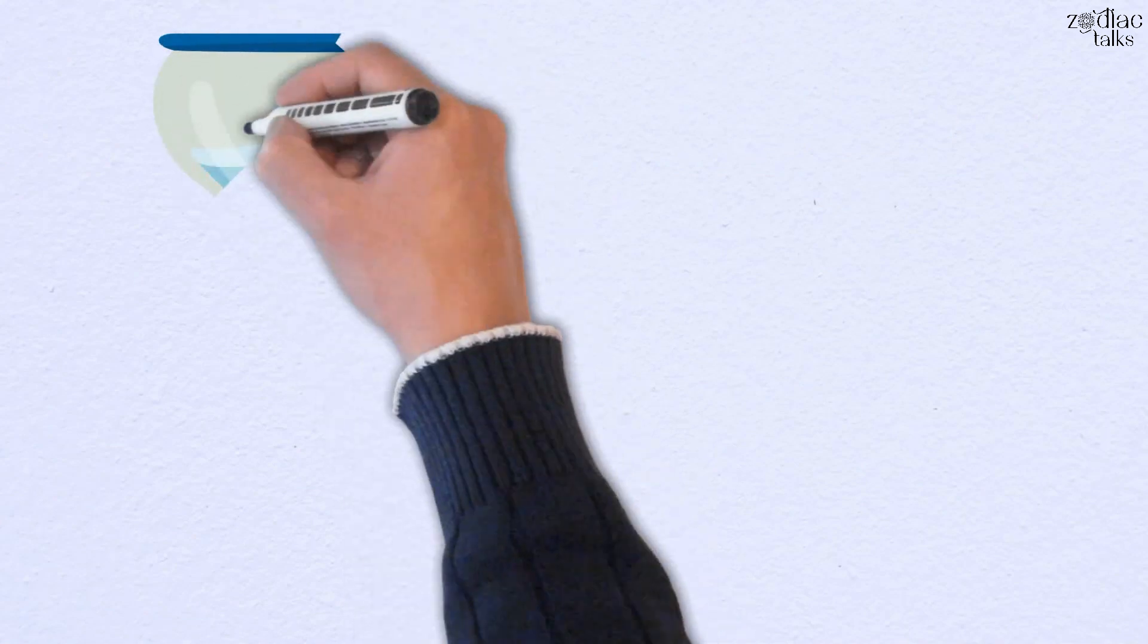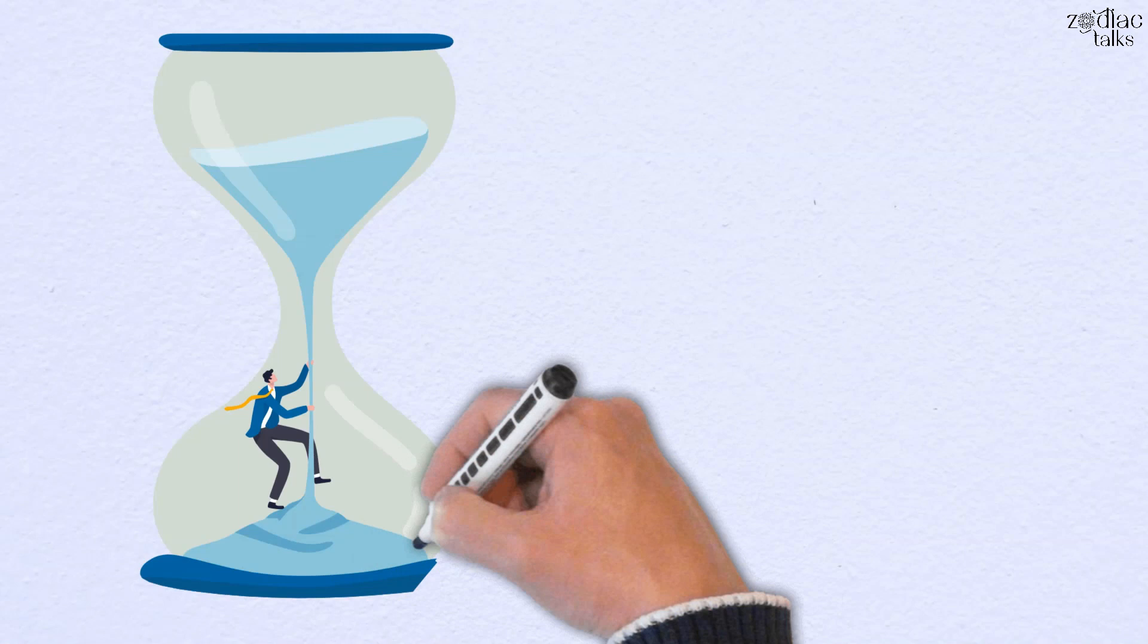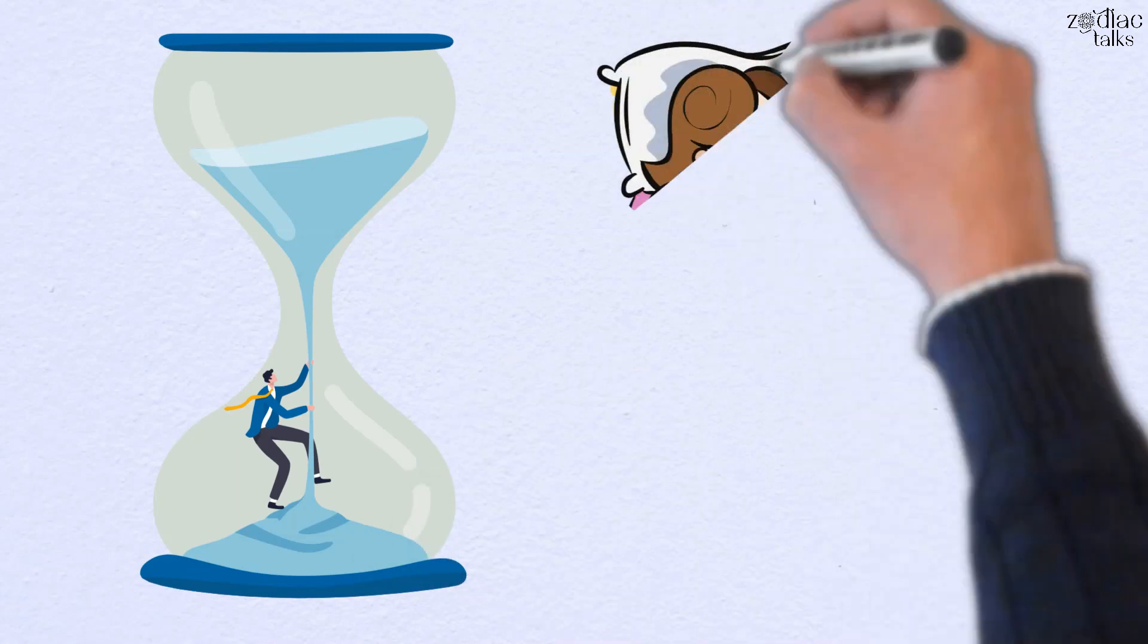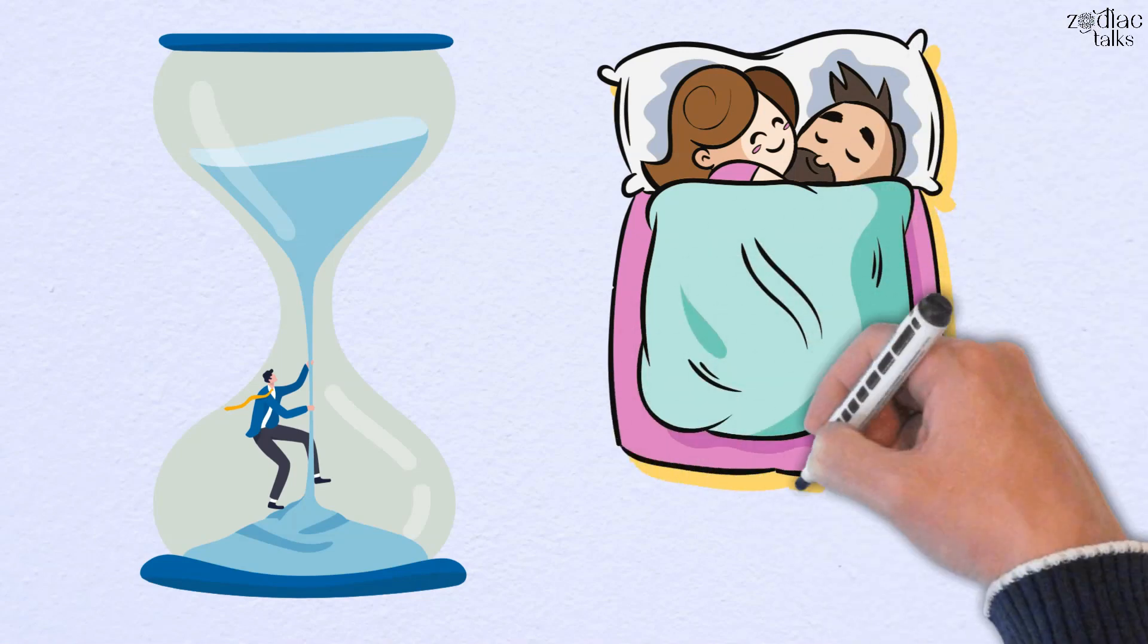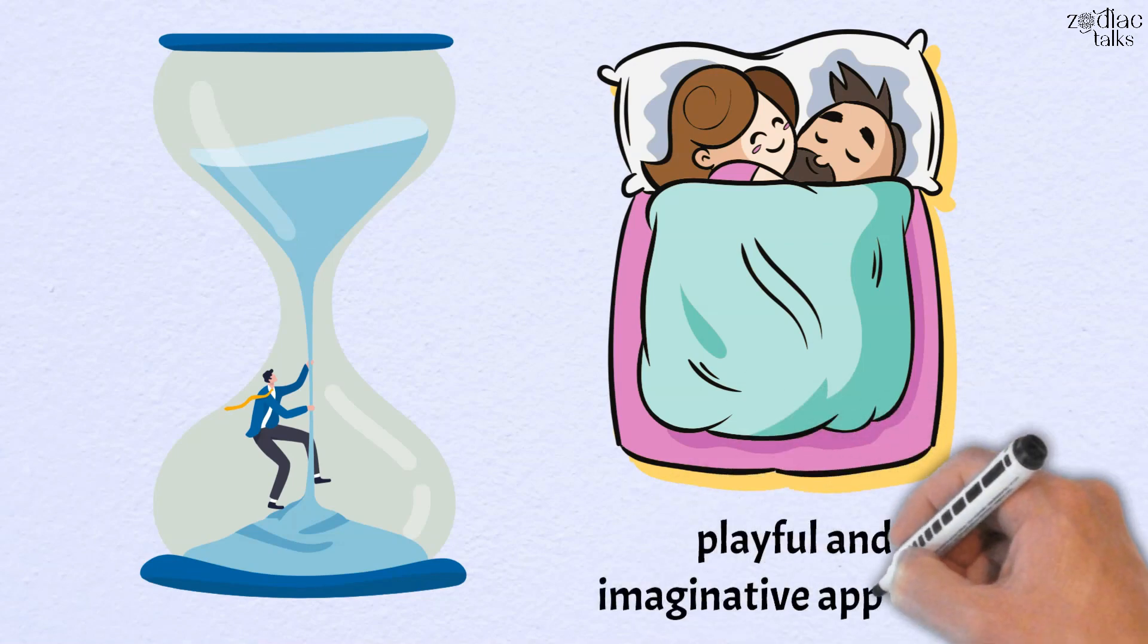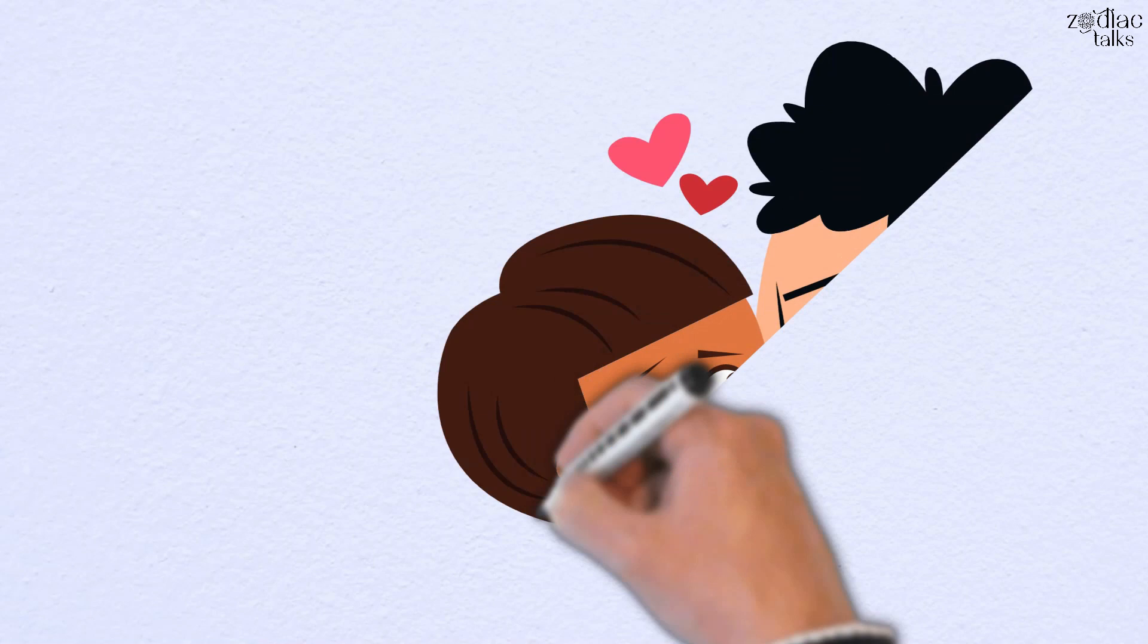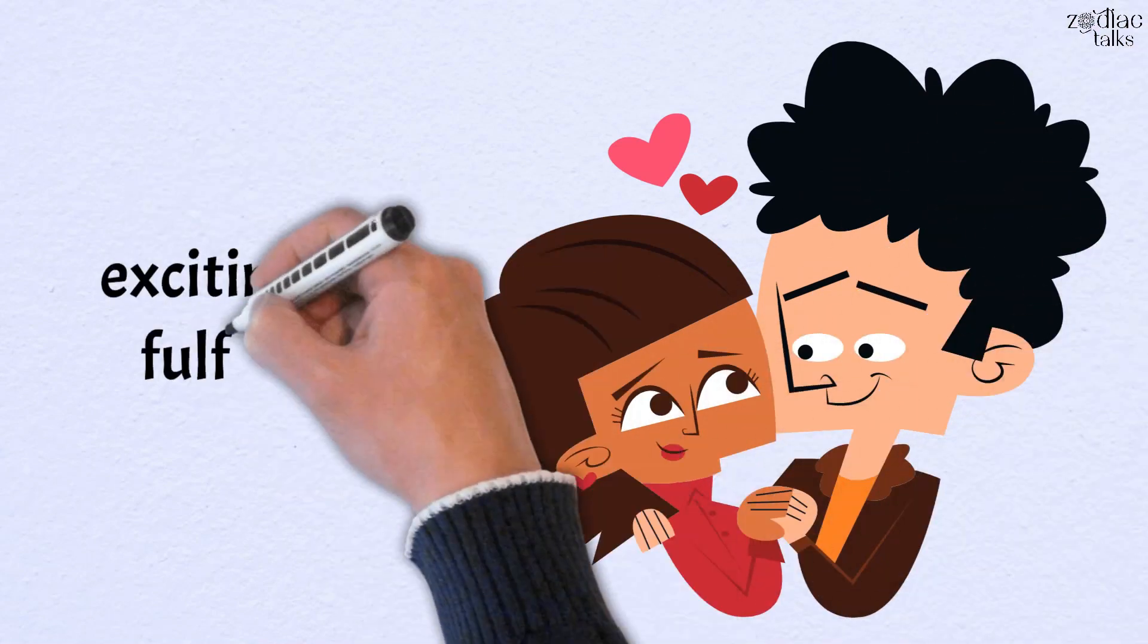In love, the Taurus Woman may desire stability and consistency, while the Gemini Man may crave novelty and change. In the bedroom, they can explore a range of sensual experiences that blend the Taurus Woman's desire for physical pleasure with the Gemini Man's playful and imaginative approach. As they navigate their desires and boundaries with each other, they can create a sexual connection that's both exciting and fulfilling.